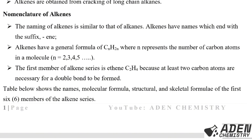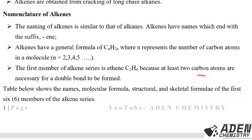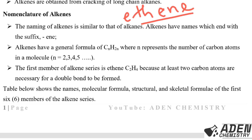The first member of alkenes is ethene, written as C2H4. Remember when dealing with alkanes the first member was methane, written as CH4. For alkenes, the first member is ethene — there is nothing called 'methene' — because at least two carbon atoms are necessary for a double bond to be formed. The prefix that stands for two carbon atoms is 'eth-', so we add the suffix '-ene' to get ethene.